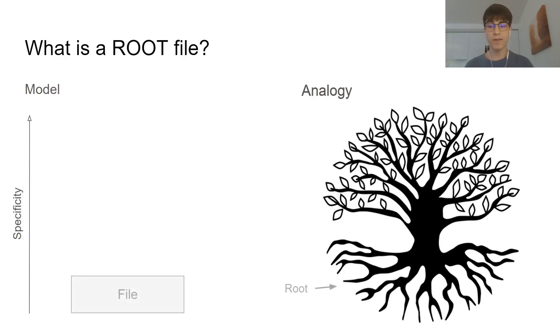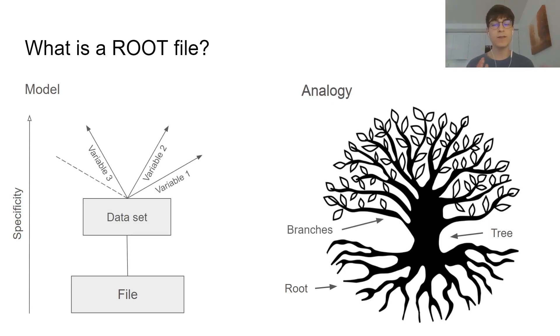Starting from the bottom, we have the file itself, here represented by the root. Later, we have the dataset, which is the tree. Each tree has different variables or branches that represent each type of measurement: length, height, duration, distance, etc. And each variable has its own entries or leaves, which are the values of the data itself.